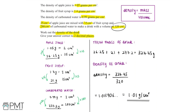This question is worth 4 marks. The first mark is for finding the mass of the apple juice at 26.25 grams, the fruit syrup at 21 grams, and the carbonated water at 277.2 grams. The second mark is for finding the total mass of 324.45 grams by adding these values together. The third mark is for the process of dividing 324.45 by 320, and the fourth mark is for getting the correct answer of 1.01 grams per centimetre cubed, rounded to two decimal places.